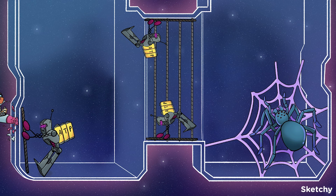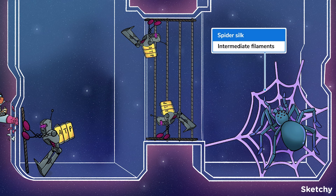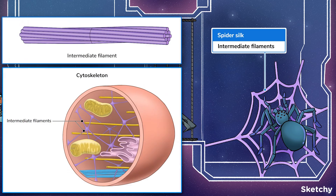This spider isn't just here to scare the bejeepers out of us. Its silky web represents intermediate filaments. Intermediate filaments are made of filamentous proteins called keratin, desmin, vimentin, and lamins. They're called intermediate because their width is in between that of a microfilament, which is narrower, and a microtubule, which is wider. You'll find intermediate filaments dispersed throughout a cell.